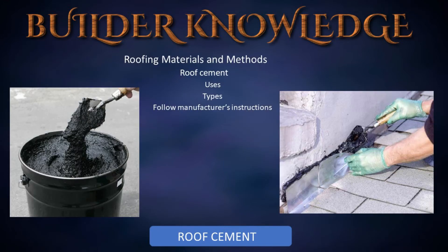Next let's cover roof cement — this can be a sticky subject, and if you have used it before you know it sticks to everything. Roof cement is used for installing eave flashing, for flashing assemblies, for cementing tabs of asphalt shingles, and for laps in sheet metal, and lastly for repairing roofs.